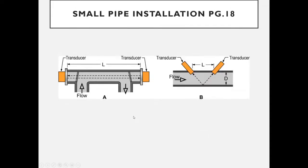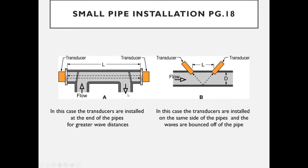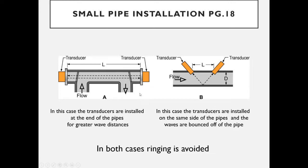Revisiting small pipe installations: the configuration with transducers on the same side bounces the ultrasonic wave off the back pipe wall. An alternative is using a fast-loop bypass with transducers on opposite sides, where the loop width can be adjusted to provide sufficient travel distance for the electronics. Both approaches avoid the ringing problem that occurs when the pipe diameter is too small.